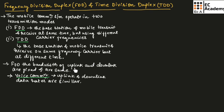Uplink is the link from ground station to satellite. Downlink is the link from satellite down to the ground station.